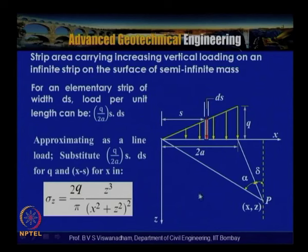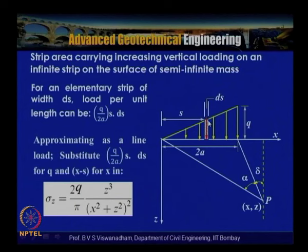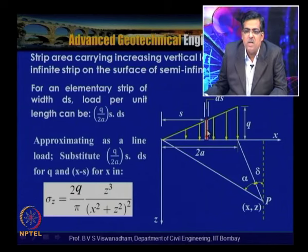The load intensity per unit length at position s is found by similar triangles as (q / 2a) × s. The load per unit width for the small strip ds is (q/2a) × s × ds, which we treat as a small line load. So the line load intensity is q × s × ds / (2a), running over infinite length.